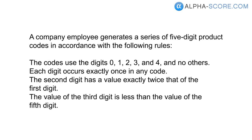Here's our LSAT logic game setup. Let's take a quick read through and then we can set up a diagram. A company employee generates a series of five-digit product codes in accordance with the following rules: the codes use the digits zero, one, two, three, and four and no others; each digit occurs exactly once in any code; the second digit has a value exactly twice that of the first digit; and the value of the third digit is less than the value of the fifth digit.